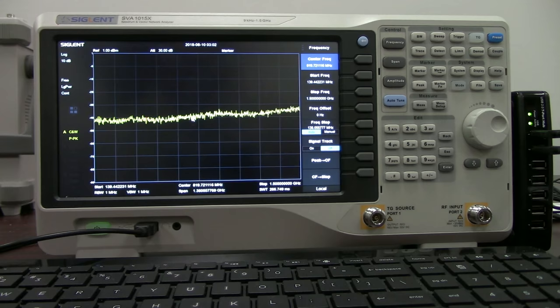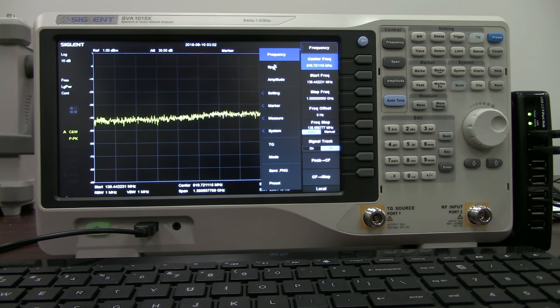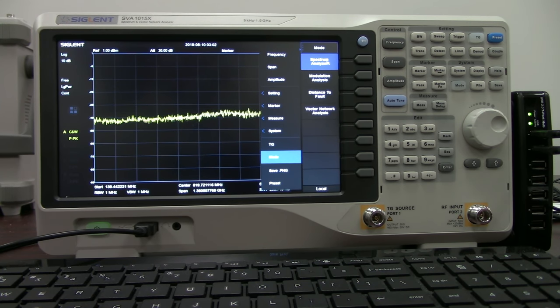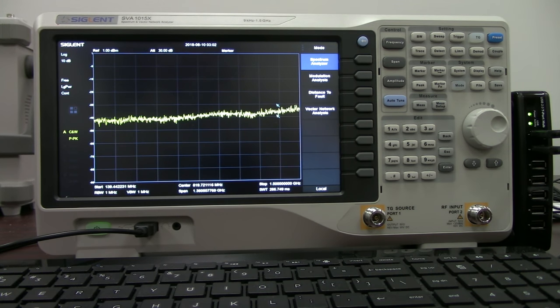In a later video I'll show you a little bit more about the web interface as well as what we've got here for the different modes of operation. Here we've got spectrum analyzer mode. That's standard. But it also has optional modulation analysis, distance default, and vector network analysis. And we'll cover those in additional videos in the future.